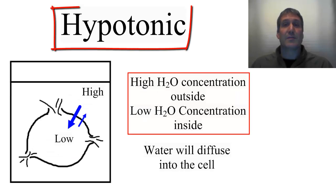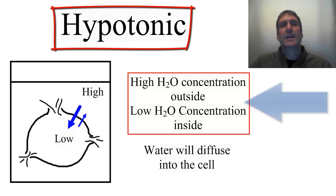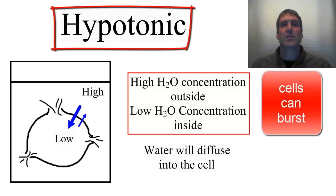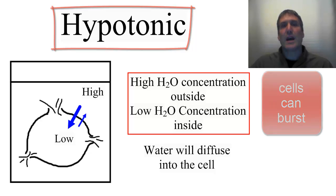The second type of solution is a hypotonic solution. The reason I said hypotonic is because there's a higher concentration of water outside the cell than inside the cell. More water is being bumped into the cell than is being bumped out of the cell, so water will diffuse into the cell, causing it to blow up.